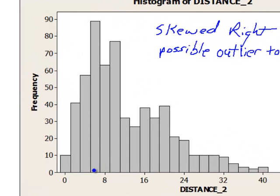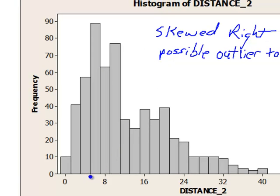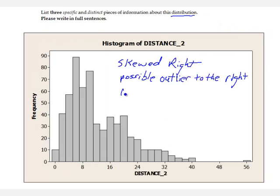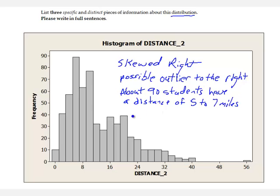We discussed that the bin class with the largest frequency was between 5 to 7 miles, and that frequency was about 90 students' distance from Cincinnati State to home. So these were the three things we discussed.